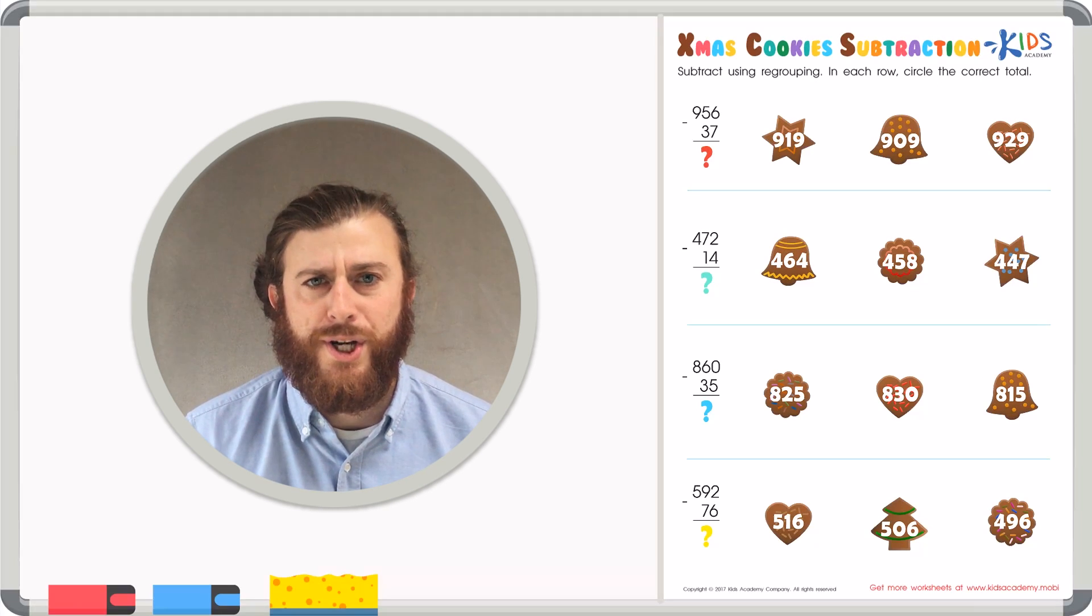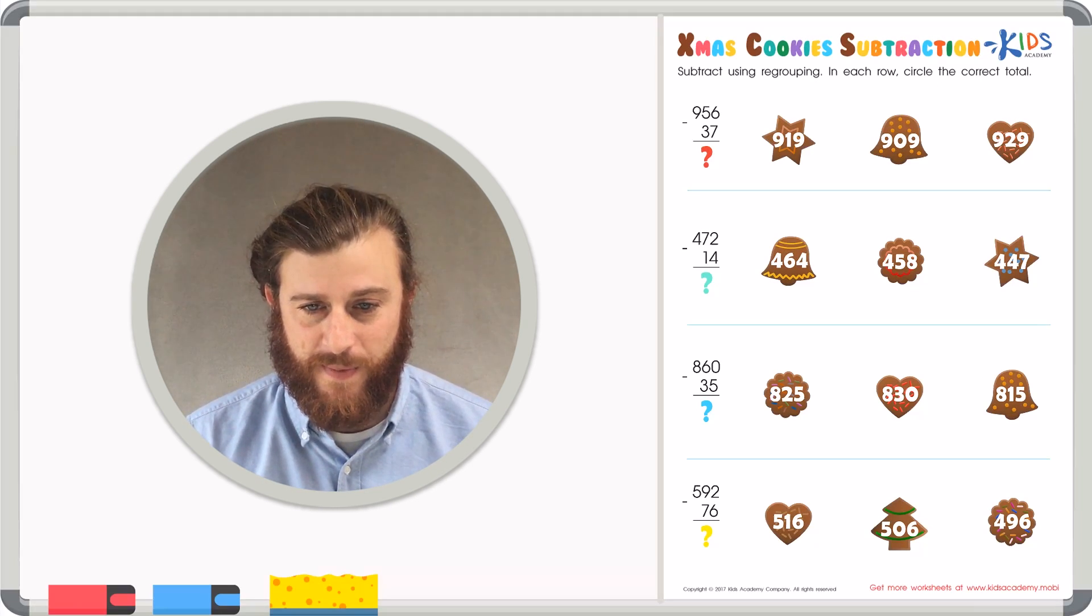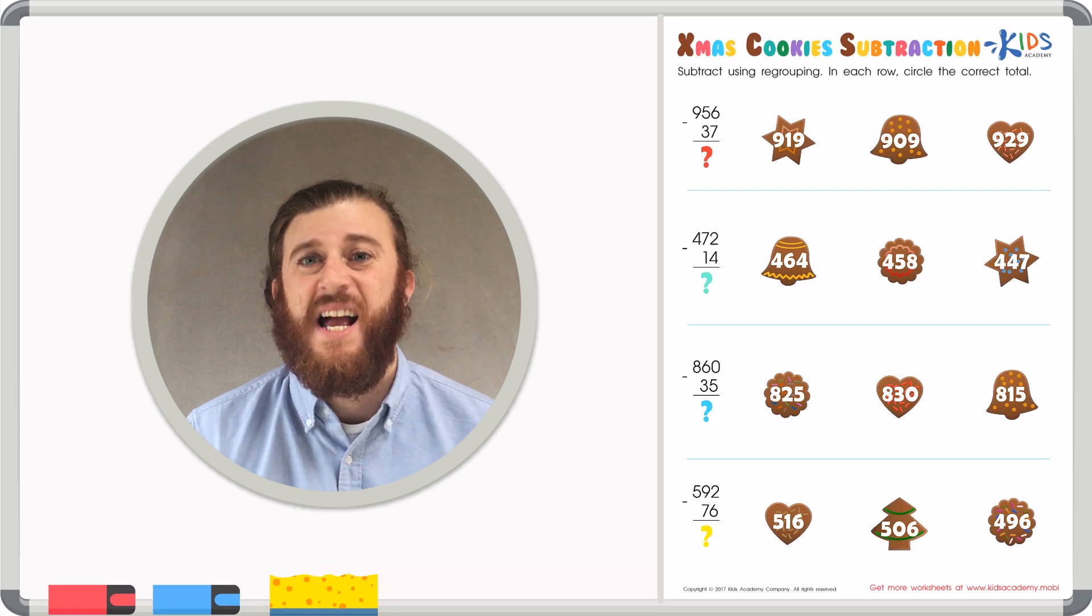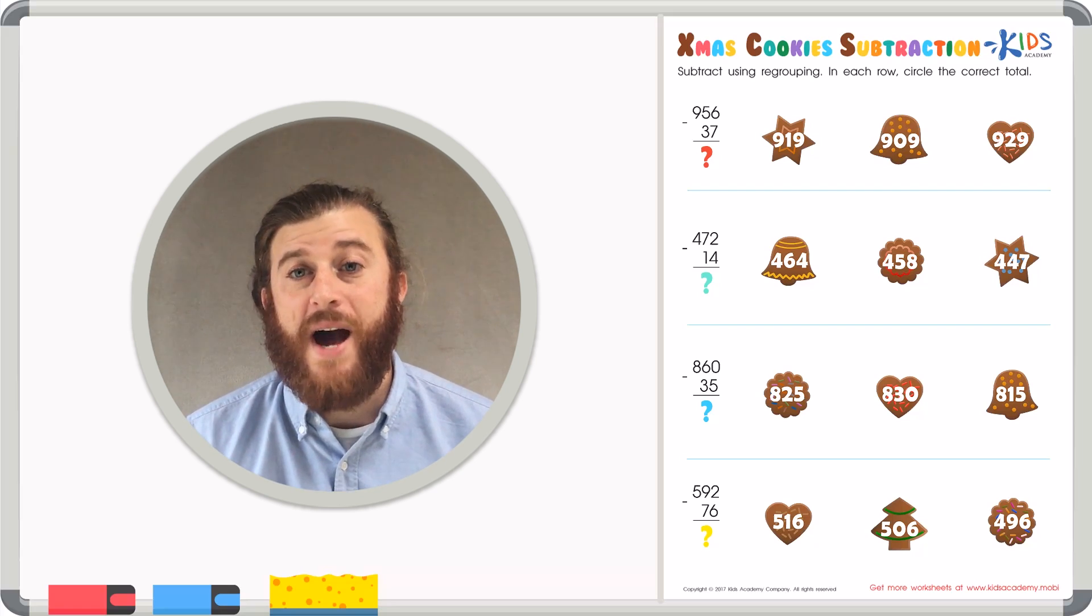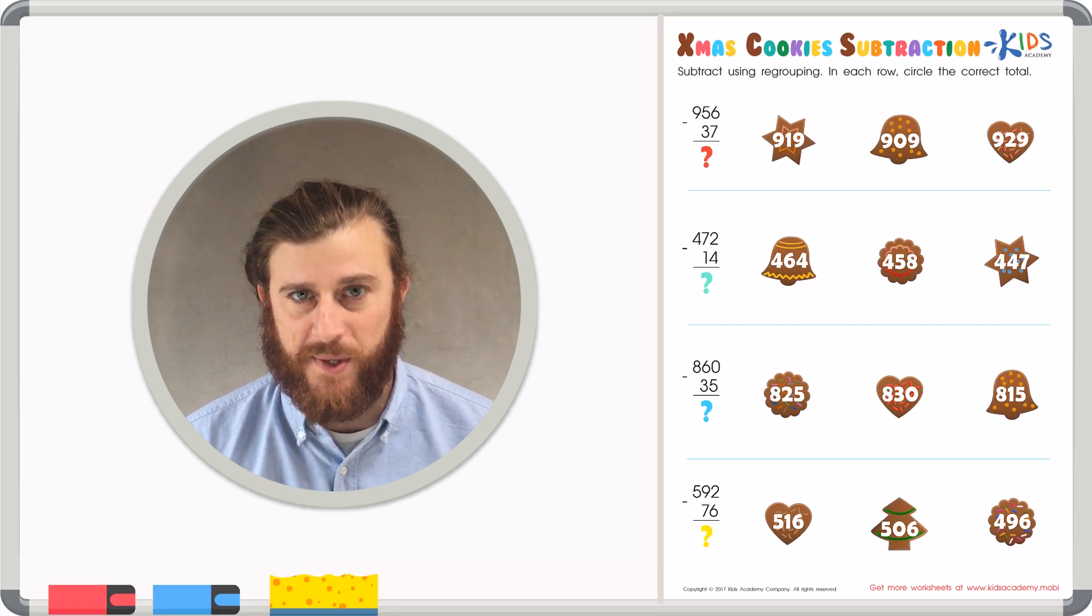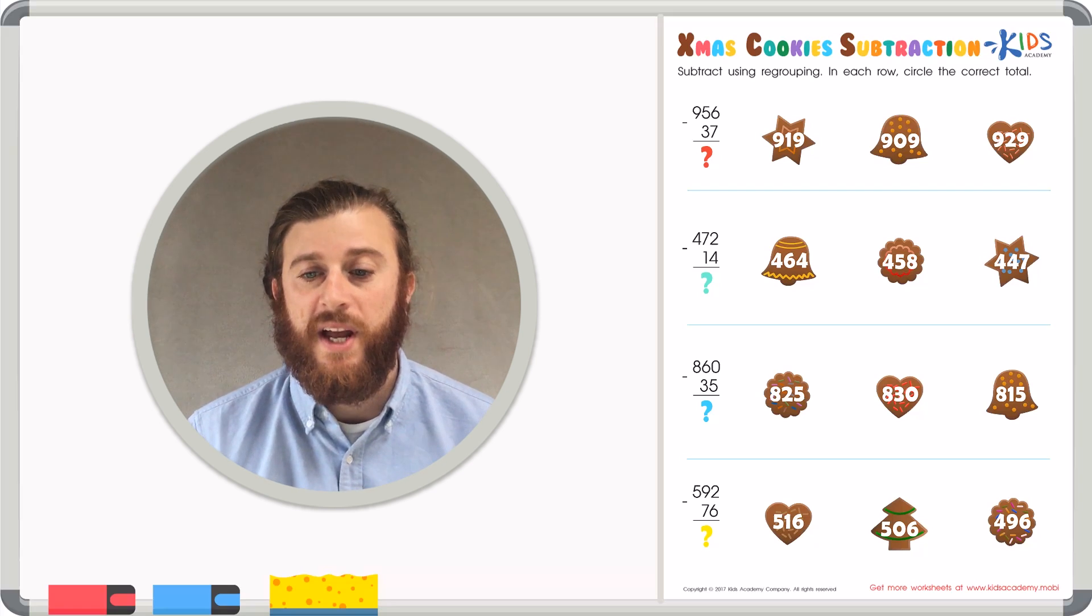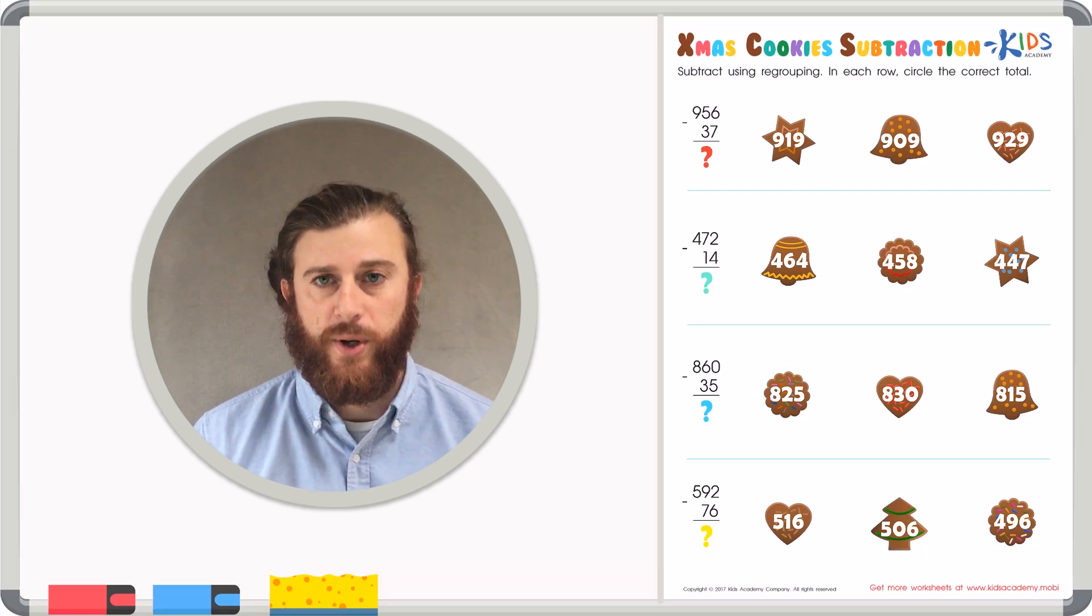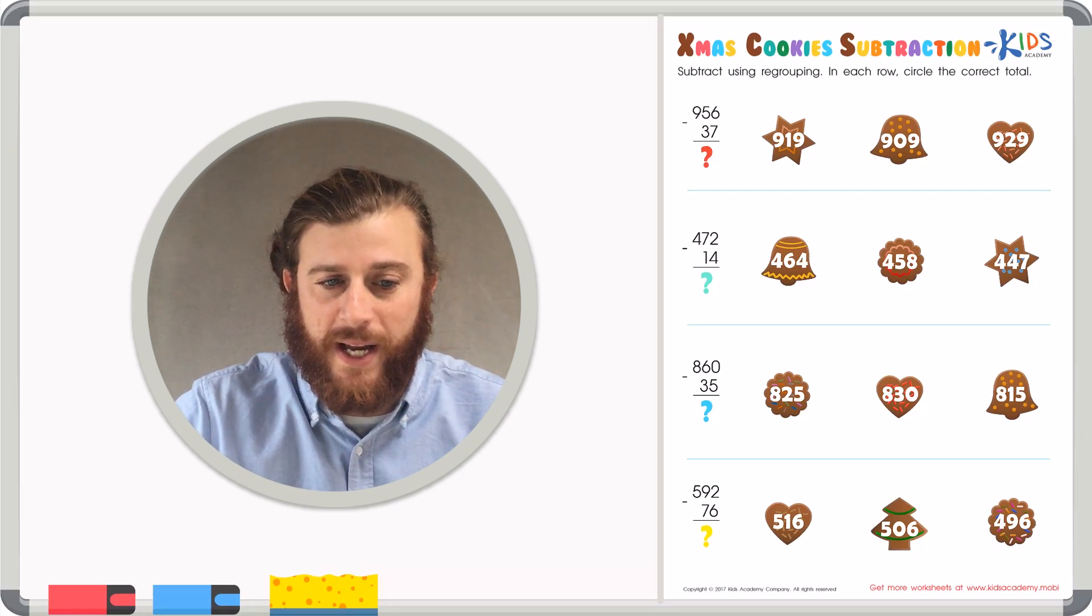Today we're going to be looking at a worksheet called Christmas Cookie Subtraction. Let's read the directions and look at an example so that way we're ready to solve the problems on this worksheet. Subtract using regrouping and each row circle the correct total. Let's look at an example before we get started.